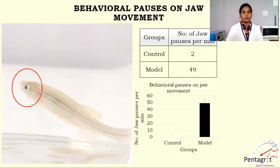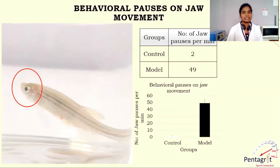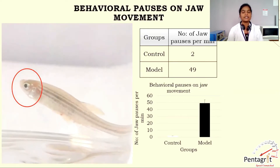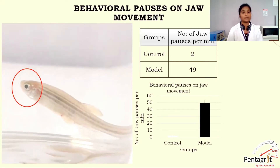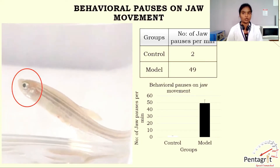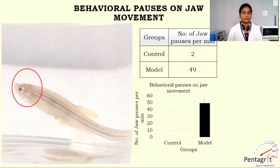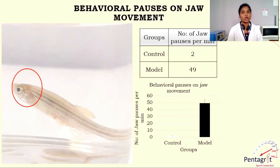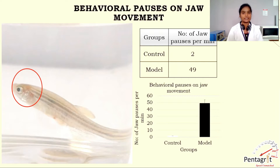Next is behavioral pauses on jaw movement. Parkinson's disease often leads to involuntary and rhythmic jaw movements. Uncoordinated movement may be a sign of disruptive neuromotor response that causes an inability to coordinate movement. The study fish is introduced into a small experimental tank and the jaw movements were recorded for a period of 10 minutes. The number of jaw pauses was counted from the video recorded. On the screen is the graph between control and model — the model shows more behavioral pauses on jaw movement compared to control, indicating rigidity of fine muscles and involuntary pauses.